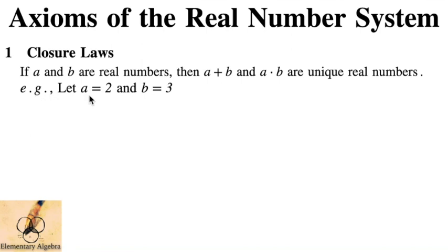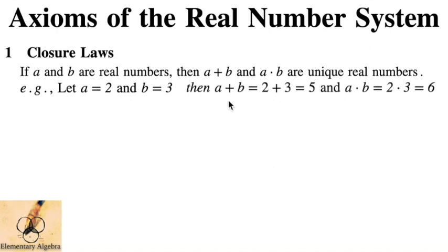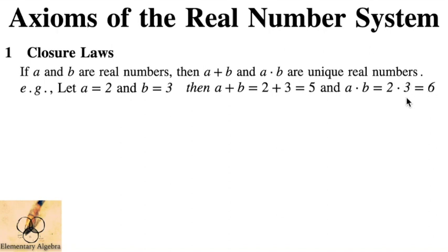For example, if A is 2 and B is 3, then A plus B gives us 2 plus 3, which is clearly 5, and 5 is unique from A and B — it's different from 2 and 3. Also, A times B gives us 2 times 3, which is 6, and 6 is a unique real number different from 2 and 3. That is what the closure law states.